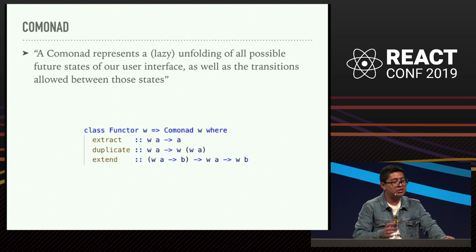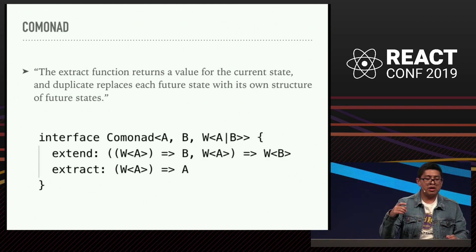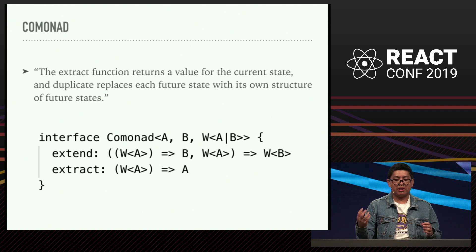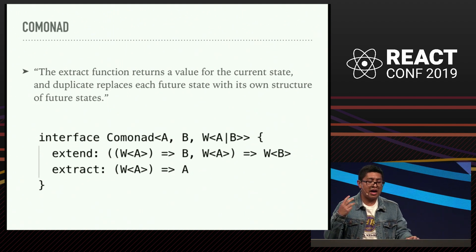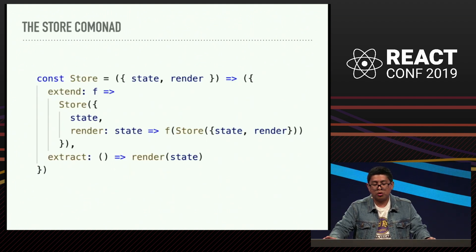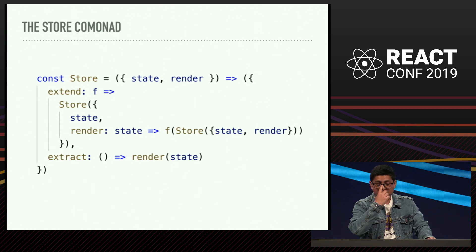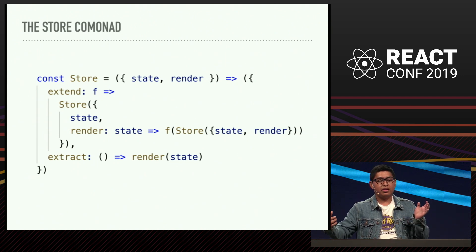I wasn't entirely sure how to translate that to TypeScript, but I'm going to try. You can think of a CoMonad as an interface with two functions we care about: Extend and Extract. Extract will simply take an object of type A outside of that wrapper, and Extend will take a function that modifies whatever A object is there and makes it a B. We can see some patterns using a CoMonad — for example, a Store. This is simple JavaScript: it's going to take a state and a render function. Extract simply takes the state and renders it, and Extend applies the F function to build a composed Store, modifying the Store.